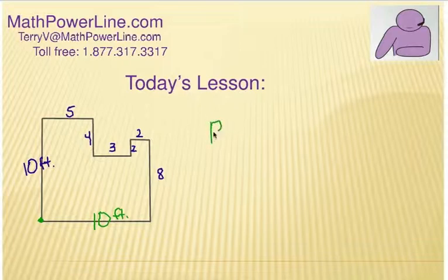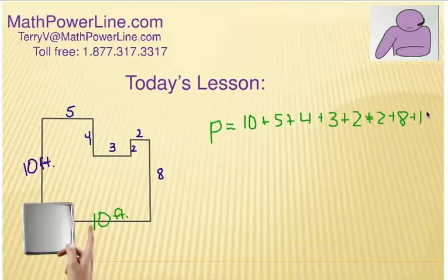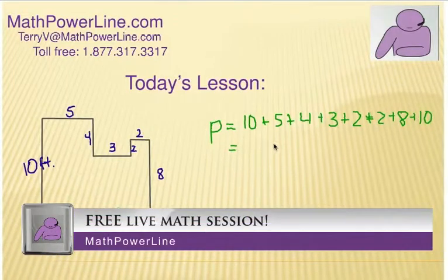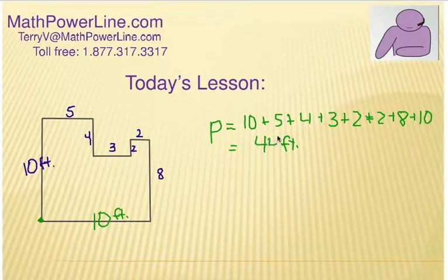So, perimeter, usually we use the letter P. So, obviously, it's going to be ten plus five plus four plus three plus two plus two plus eight, and then finally plus the last ten there. Total distance all the way around in feet should be forty-four feet. Alright. So, obviously, very easy. You just have to add up the distance all the way around.